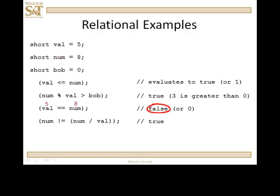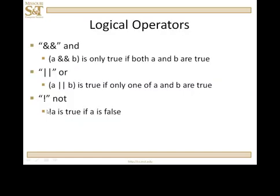How about num not equal to num divided by val? I'm going to bet that that's not true. Num is 8. Val is 5. How many times does 5 go into 8? One time. So, this is 1. Num is 8. Are they not equal? So, that evaluates to true.